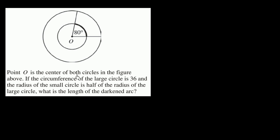Point O is the center of both circles in the figure. The circumference of the larger circle is 36, and the radius of the small circle is half the radius of the larger circle. What is the length of the darkened arc?